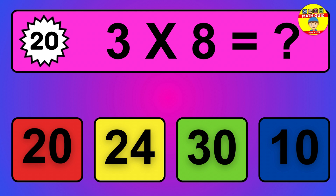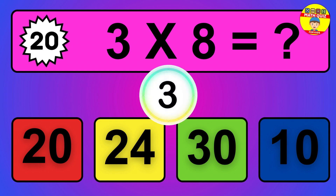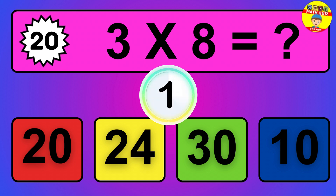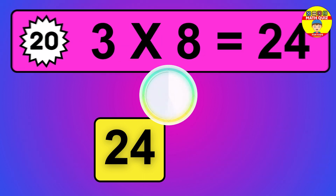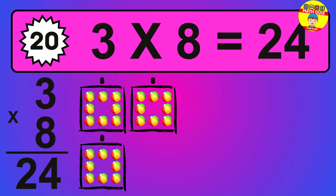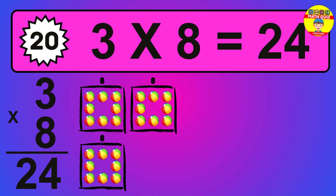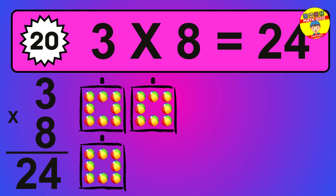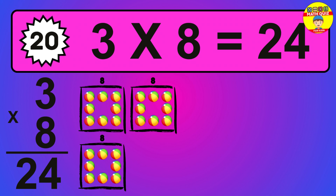Question 20. 3 times 8 equals what? So the answer is 3 times 8 is 24. To calculate, we have 3 groups with 8 balls each one. So how many balls do we have? 24 balls.